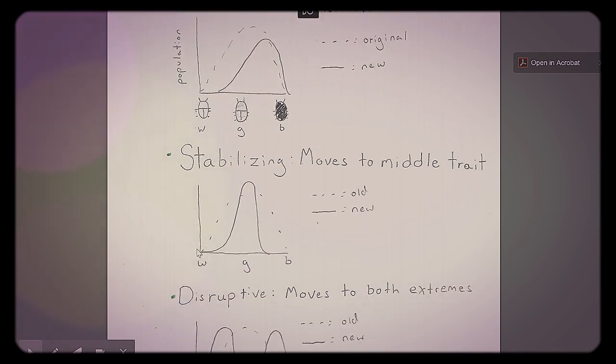They're stabilizing. It moves towards the middle trait. So it's still the beetles is what it's supposed to be, white, gray, and black. Original population, there's lots of variation. After selection, maybe just the gray ones factor. Stabilizing means it moves towards the middle of the trait.